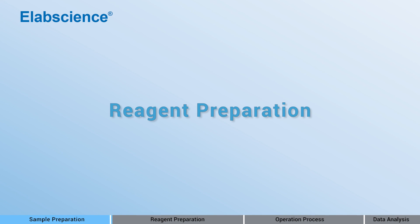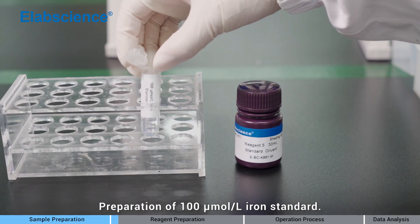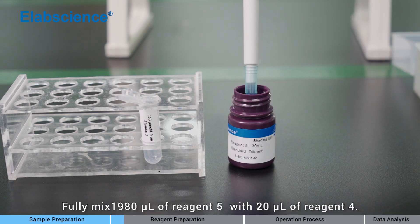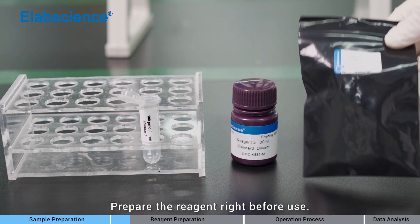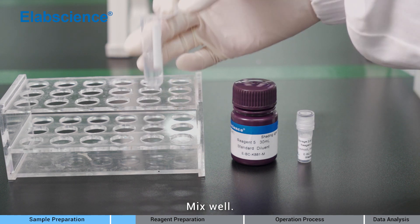Reagent preparation: Preparation of 100 micromolar per liter iron standard. Fully mix 1980 microliters of reagent 5 with 20 microliters of reagent 4. Prepare the reagent right before use. Mix well.